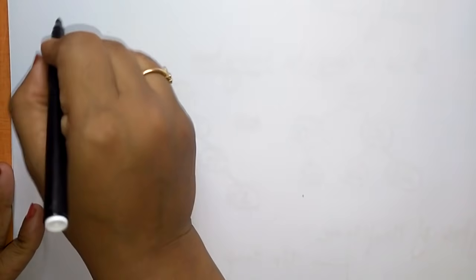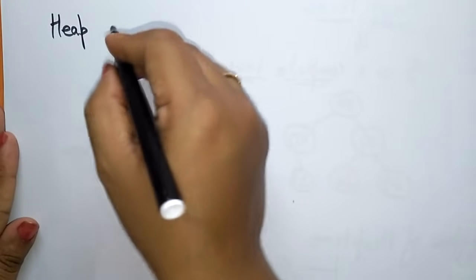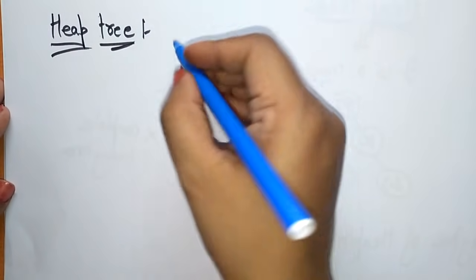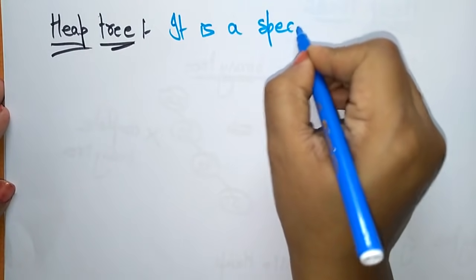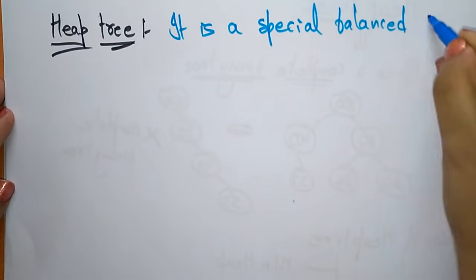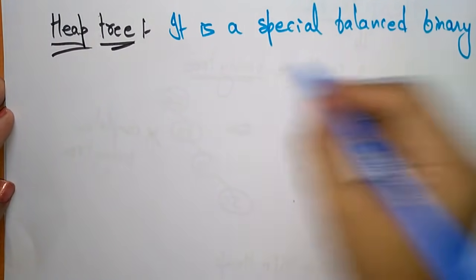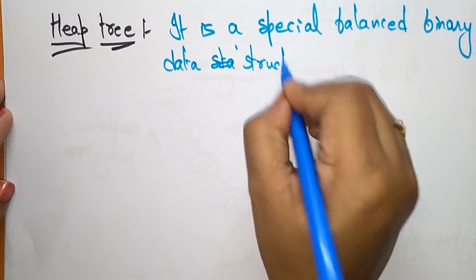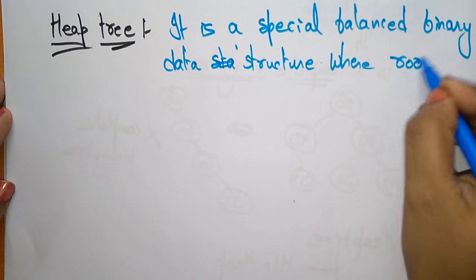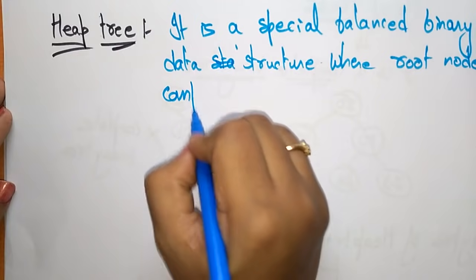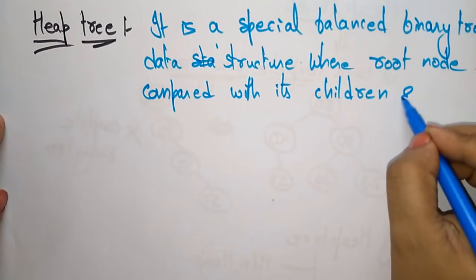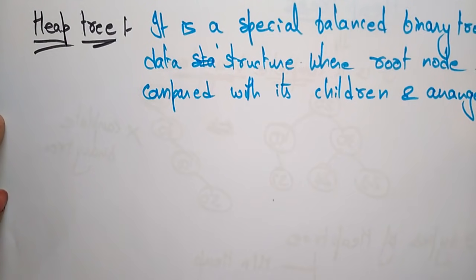Let me write the definition of a heap tree. A heap tree is a special binary tree data structure where the root node is compared with its children and arranged accordingly.